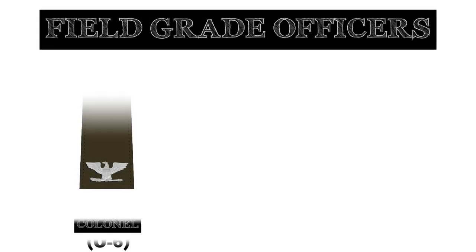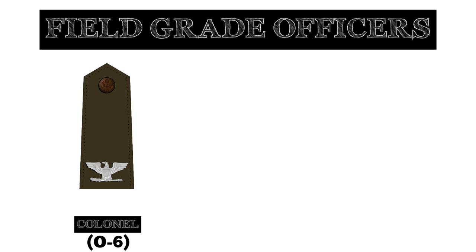Below the ranks for generals are the ranks for field grade officers. The rank of colonel is the highest field grade officer rank in the U.S. Army. Colonels typically command brigade-sized units consisting of 1,500 to 3,200 soldiers, with the assistance of several junior commissioned officers and a command sergeant major. They may also be responsible for leading division level staff agencies.